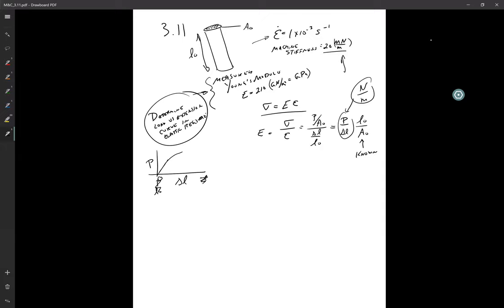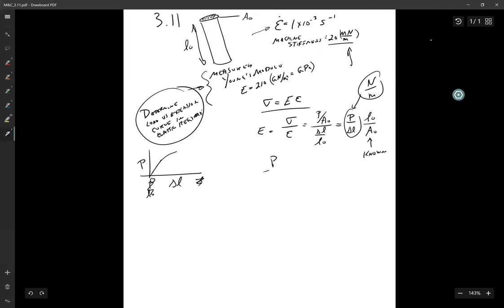And that was the key to making this all work. Because once you have that, then we can rearrange this to give us that P over Delta L is equal to E A0 over L0.